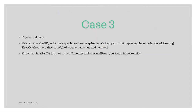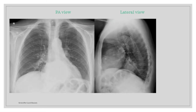In our third case, we have an 81-year-old male. This patient arrived at the ER due to some episodes of chest pain. The pain started in conjunction with eating meals. Soon after the onset of pain, he felt nauseous and started vomiting. From before, he has a known diagnosis of atrial fibrillation, heart insufficiency, type 2 diabetes, and hypertension. Some x-rays were taken — pause and take some time to evaluate.